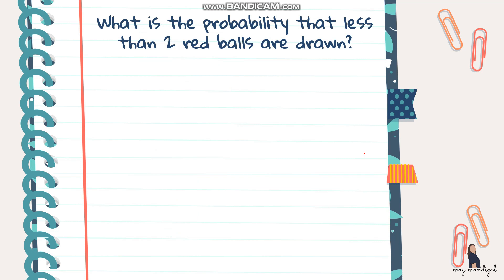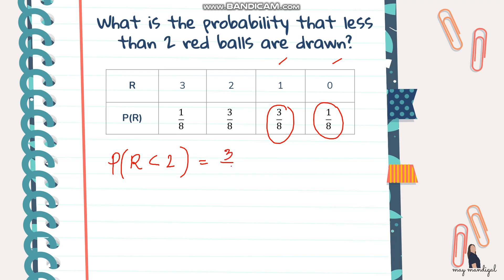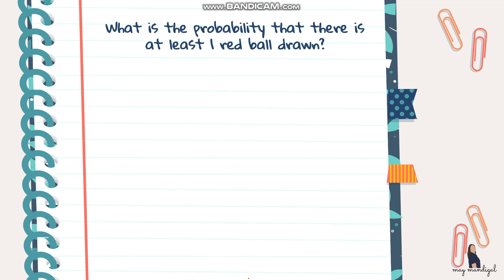What is the probability that fewer than two red balls are drawn? 'Less than two' means we consider R = 1 and R = 0. We add their probabilities: P(R < 2) = P(R=1) + P(R=0) = 3/8 + 1/8 = 4/8 = 1/2. So the probability of getting fewer than two red balls is 1/2.